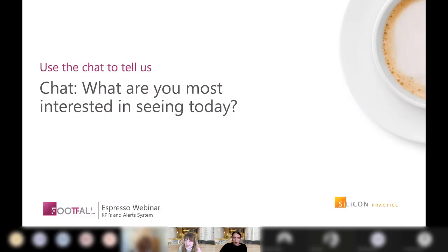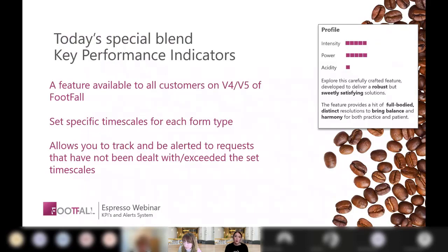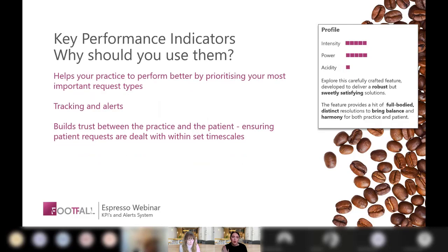KPIs are a feature available to all customers on version 4 or version 5 of Footfall. They help set specific time scales for each form type and allow you to track and be alerted to requests that have not been dealt with or have exceeded your set time scales. KPIs and alerts can help your practice perform better by prioritising your most important request types.